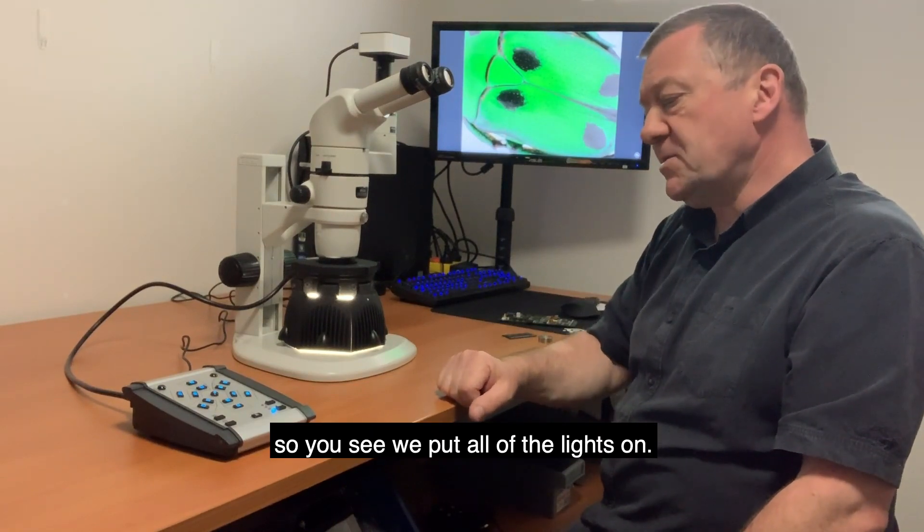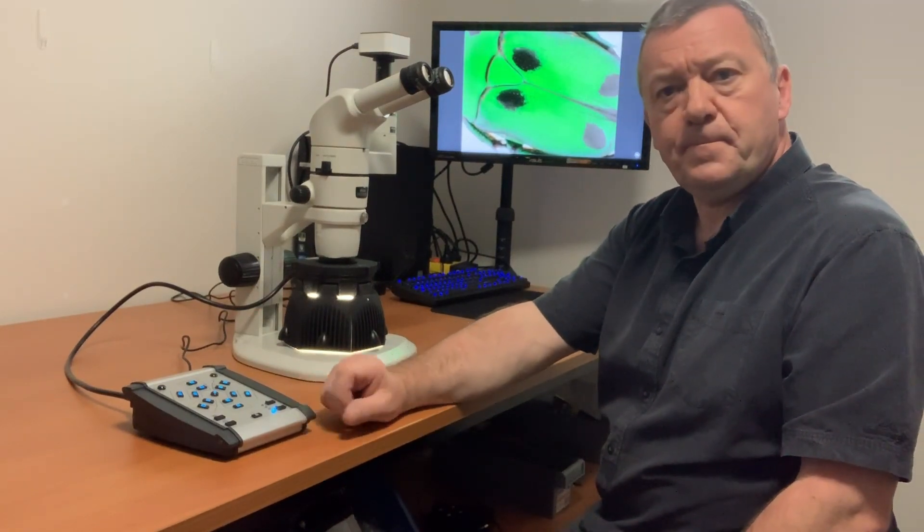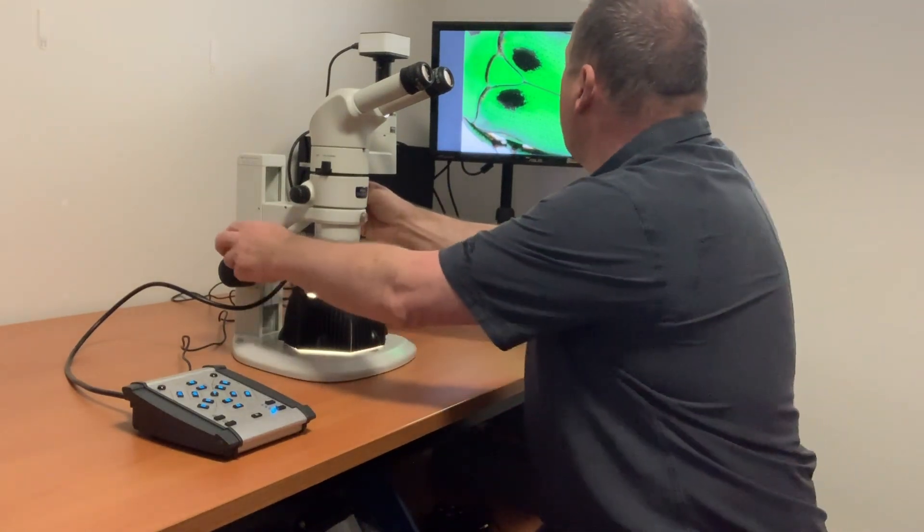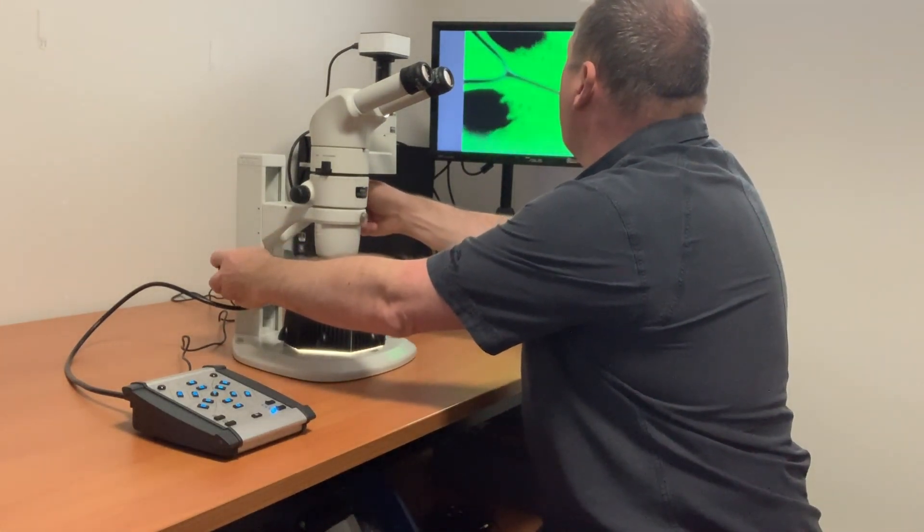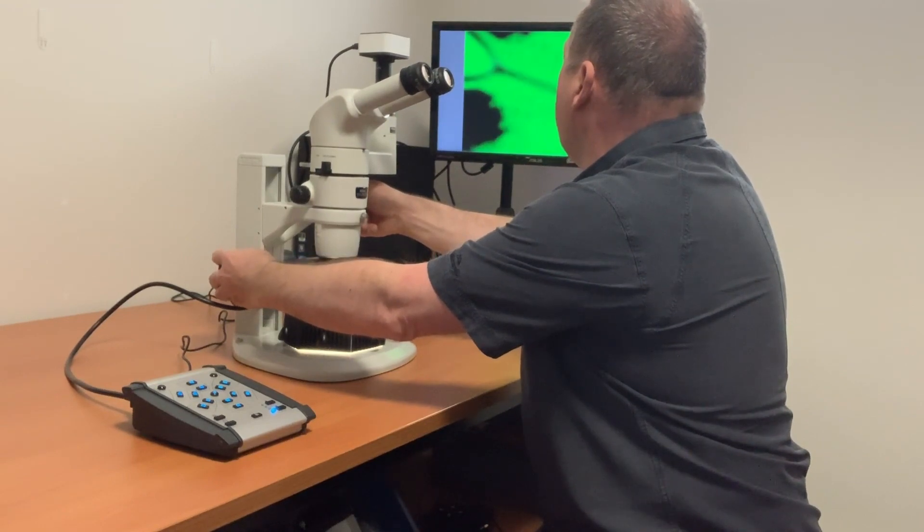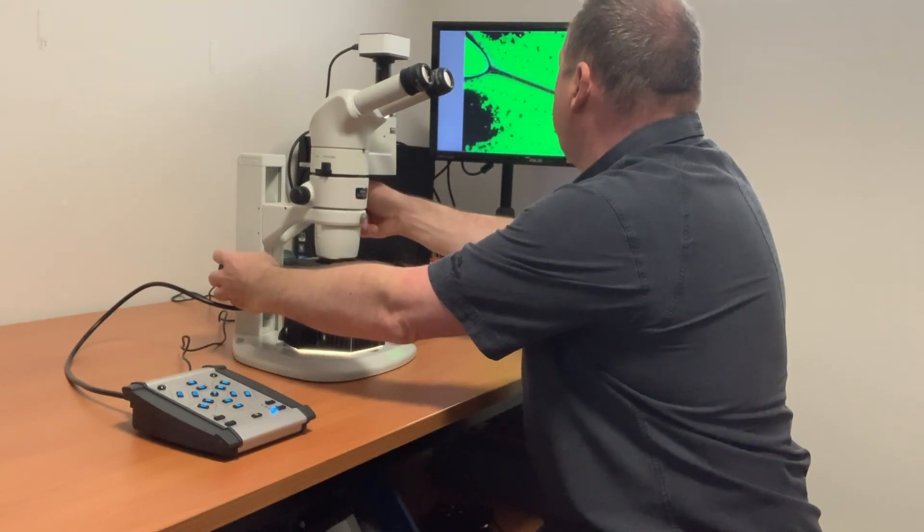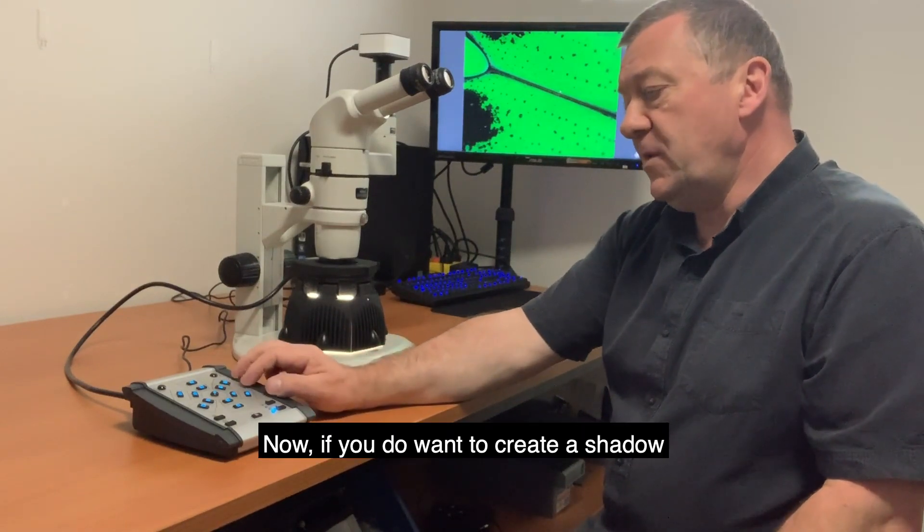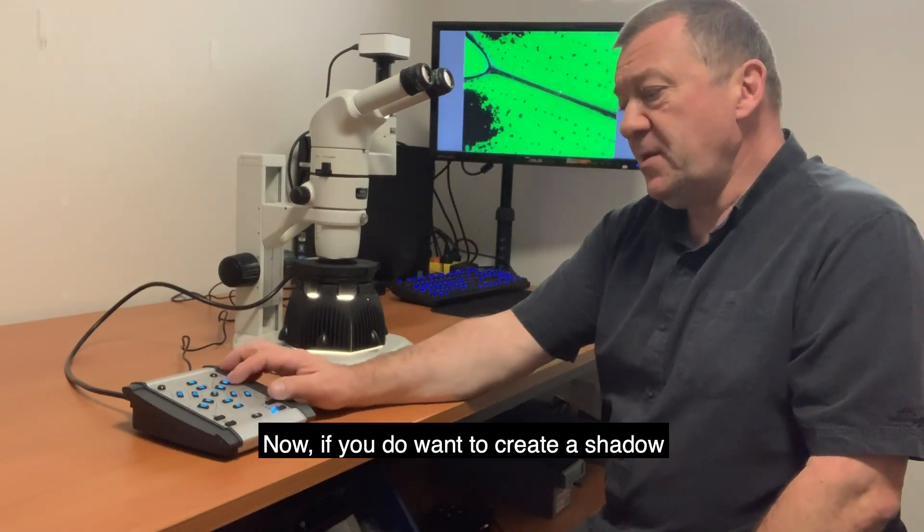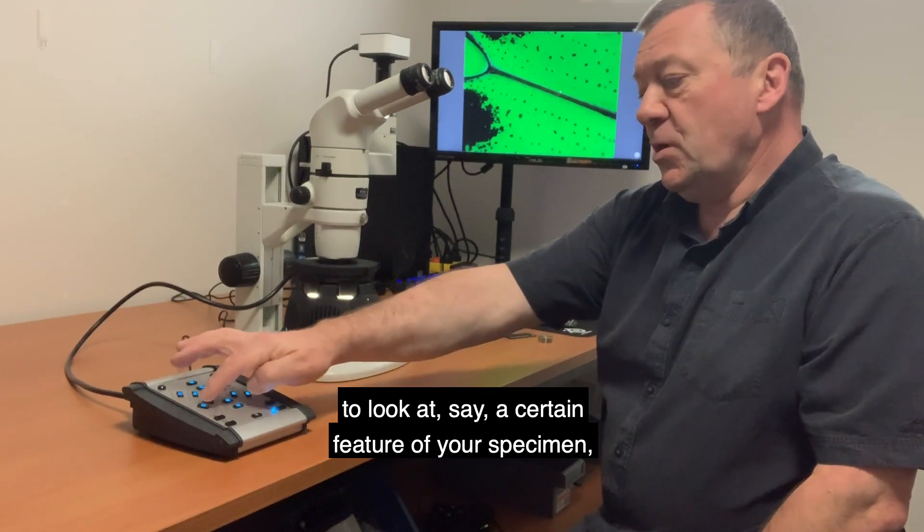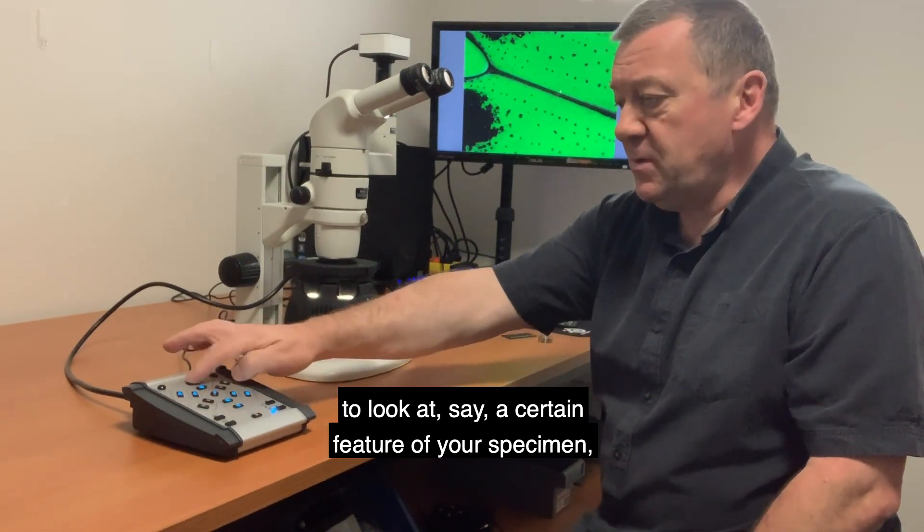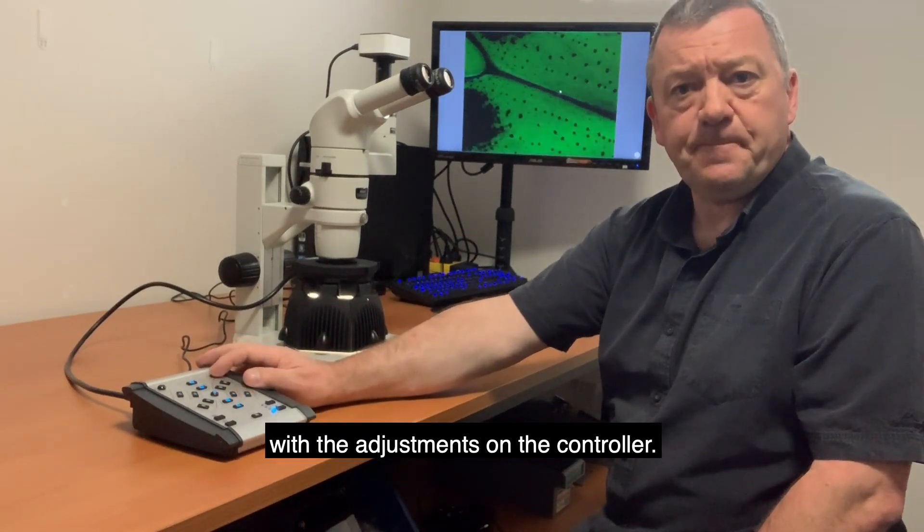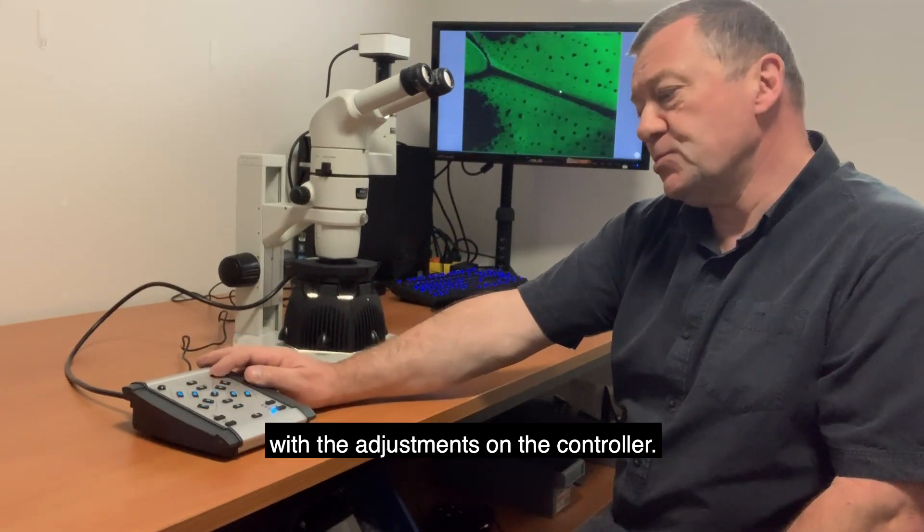You can see if we put all the lights on. Now if you do want to create a shadow to look at a certain feature of your specimen, this is completely controllable with the adjustments on the controller.